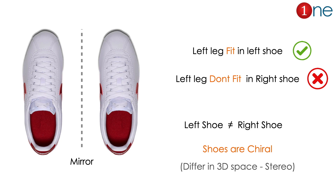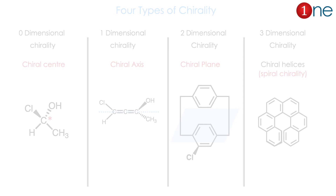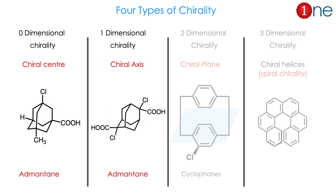Chirality means the compounds differ in 3D space, and chemicals can also be chiral. There are four types of chirality known among chiral compounds: zero-dimensional chirality, which is a normal chiral carbon with four different atoms; one-dimensional chirality, which is allene; two-dimensional chirality, which includes chiral cyclopropanes and ansa compounds; and three-dimensional chirality, which is a spiral compound like DNA, RNA, and helicenes. Our interest here is only two — chiral center and chiral axis — because adamantane can have both.